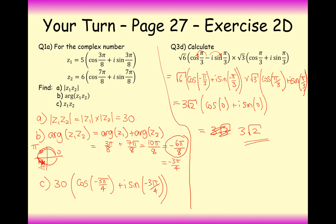Pause the video and have a go at lots of questions from exercise 2D. Remember: multiply the moduli and add the arguments; divide the moduli and subtract the arguments. Make sure your final argument stays within the −π to π range, and remember how to handle a negative sign between the sine and cosine parts. Thanks very much for watching.